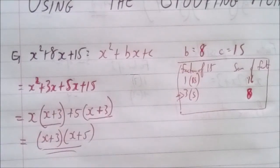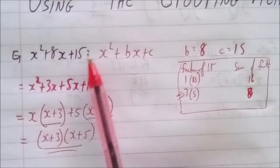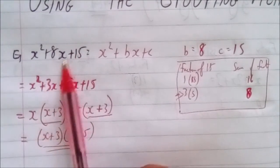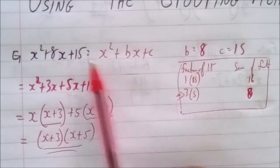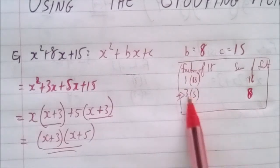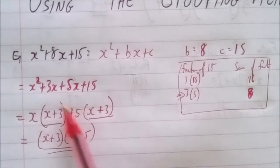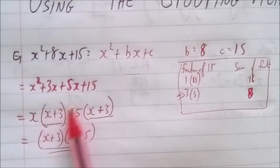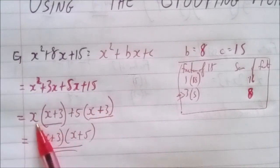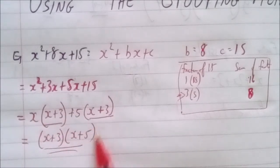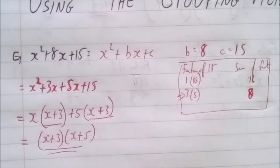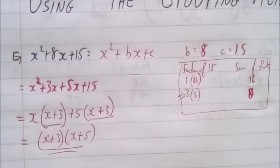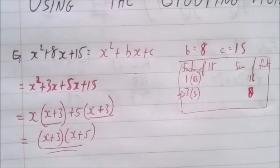Let's go over this problem again. We identify who b and c are. Since c is the product of two numbers and b is their sum, we look at the factors of 15 and find 3 and 5. We separate the middle term as 3x plus 5x, find the common term x from the first two and 5 from the third and fourth, giving us x plus 3 and x plus 5.